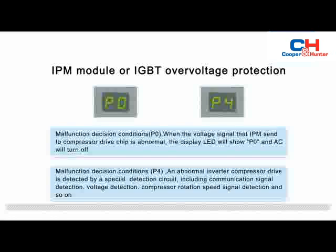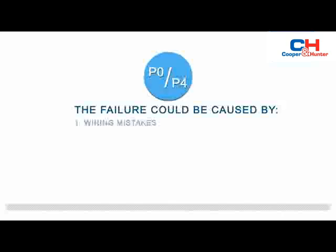Malfunction Decision Conditions — P4: An abnormal inverter compressor drive is detected by a special detection circuit, including communication signal detection, voltage detection, compressor rotation speed signal detection, and so on.